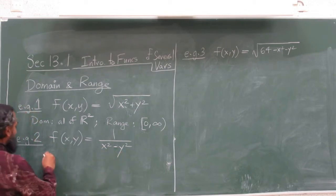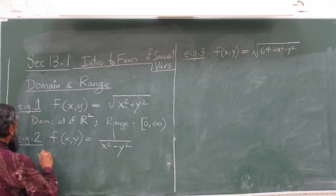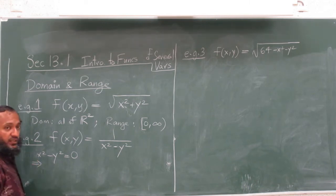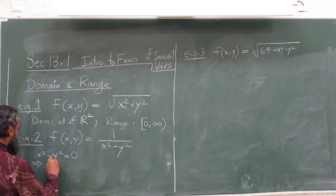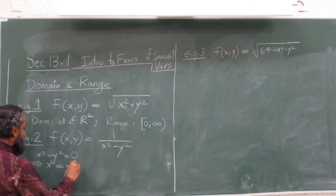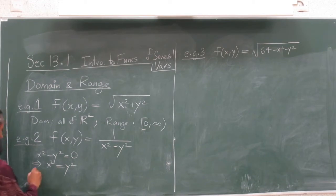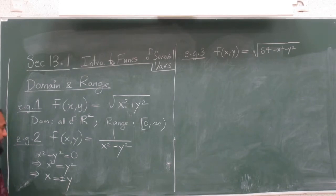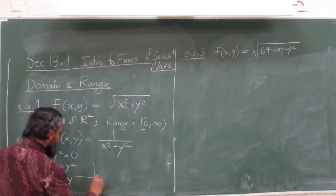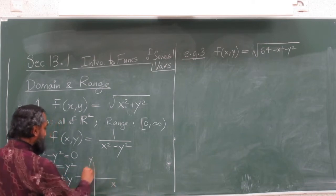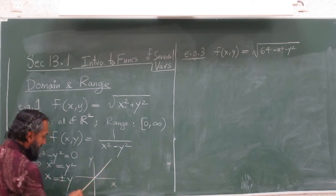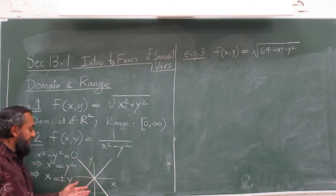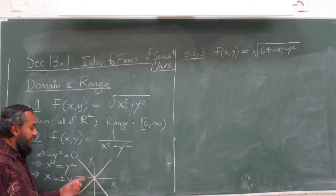For the domain, let's check where the denominator is zero. x squared minus y squared equals zero gives us x squared equals y squared, which we solve to get x equals plus or minus y. So in R², x equals y is this line, and x equals minus y — or y equals x and y equals minus x — are these two lines.